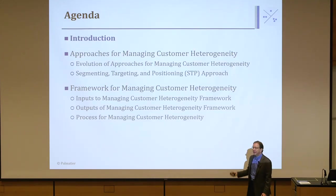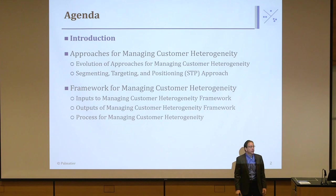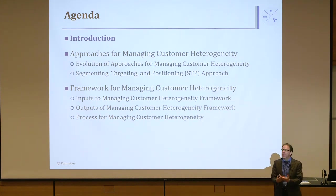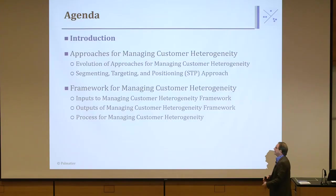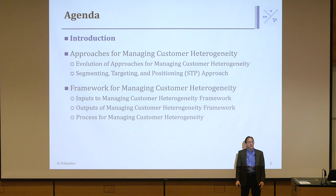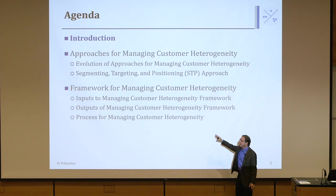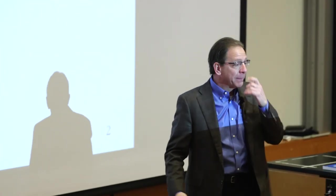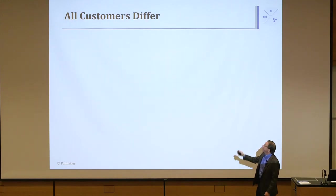Then I'm going to go through in more detail the approaches for dealing with customer heterogeneity — how can we develop marketing strategies that allow us to deal with this issue that all customers differ in their needs and desires for products? Then we'll move to the last part, which puts this into a framework: an input, output, process framework that I think makes it clear on how to manage customer heterogeneity. So with that, let's start.